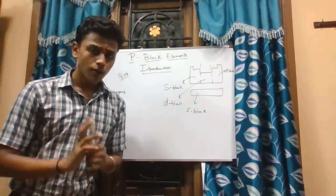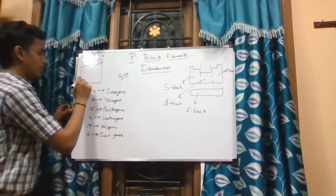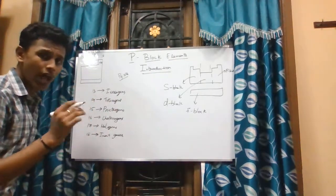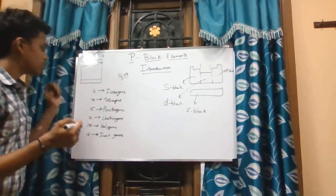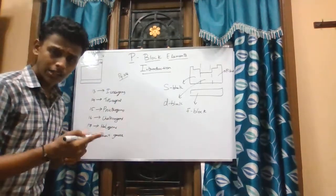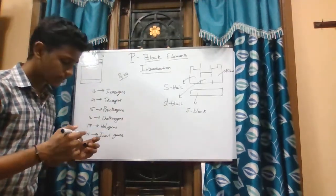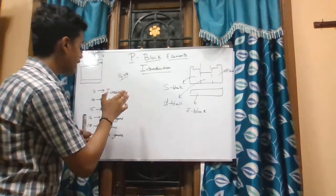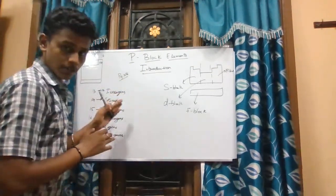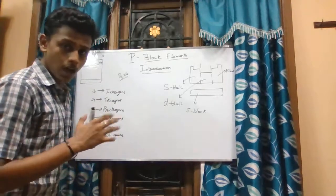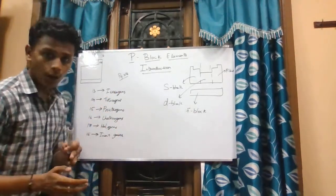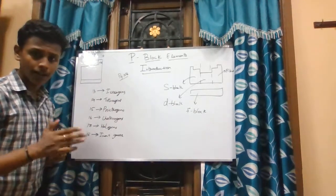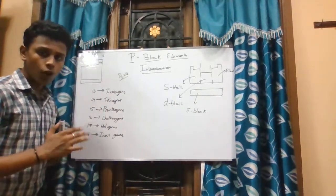The lower part of the periodic table is occupied by the radioactive elements. The P-block elements consist of metals, metalloids, and non-metals. If you refer to page number 28, the green elements are the metalloids, the dark blue ones are the metals, and the remaining parts are the non-metals.